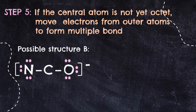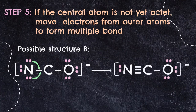For structure B, we take 4 electrons from nitrogen only — forming a triple bond between carbon and nitrogen — with a single bond to oxygen. Checking carbon: 2, 4, 6, 8 electrons surrounding it, so octet achieved with 4 bonds consistent with group 14.